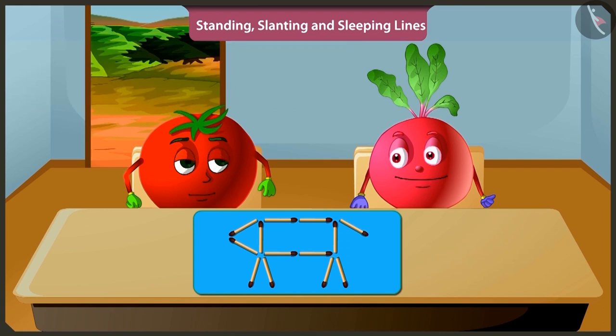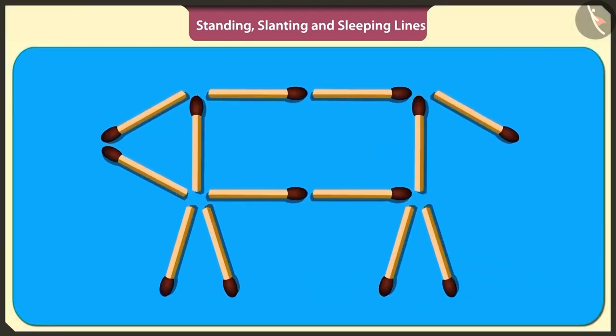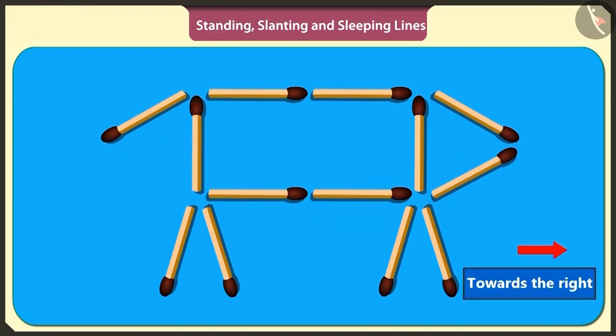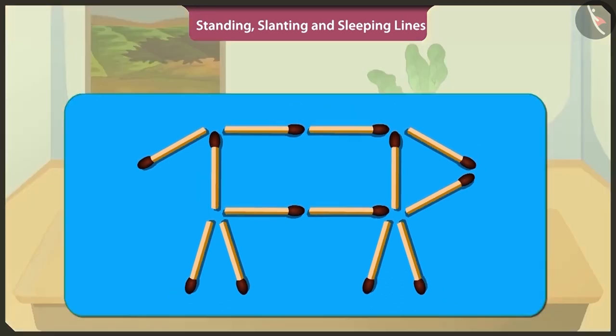Oh, so this is the puzzle. By lifting the matchstick under the mouth of the dog and placing it in a slanting position near its tail will show the dog going towards the right. Well done.